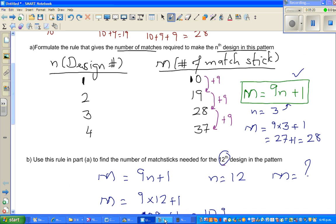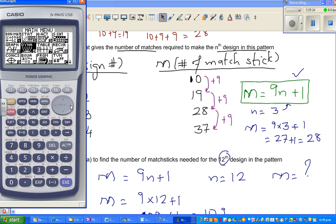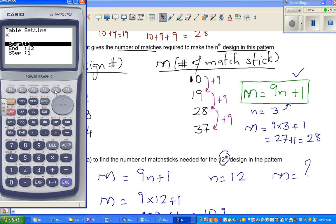Now, the good way, you're allowed a graphic calculator, so go to table and type in that equation. Your y you can compare with m, and your n you can compare with x. So I'm going to type in 9x plus 1. n you're relating with x. Then go to set, and I set the table from 1 to 12.